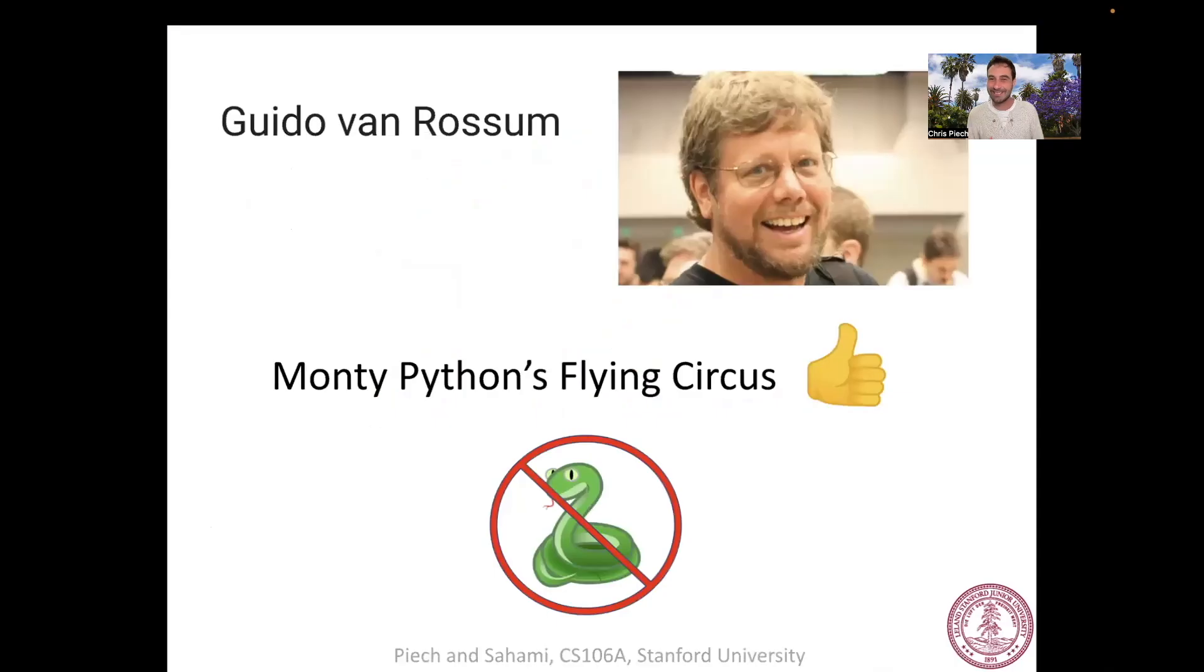As a small aside, Python was actually invented by a person. There's a person who's like, I want to make a programming language. I'm going to call it Python. That person was Guido van Rossum. And just in case you're curious, it's not named after the snake. Instead, it's named after this TV show called Monty Python's Flying Circus. A little fun fact you can tell your friends.